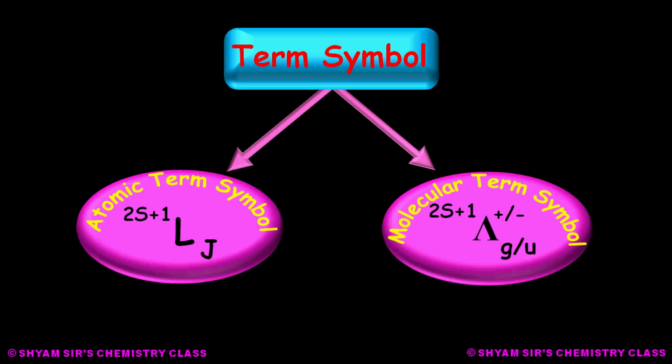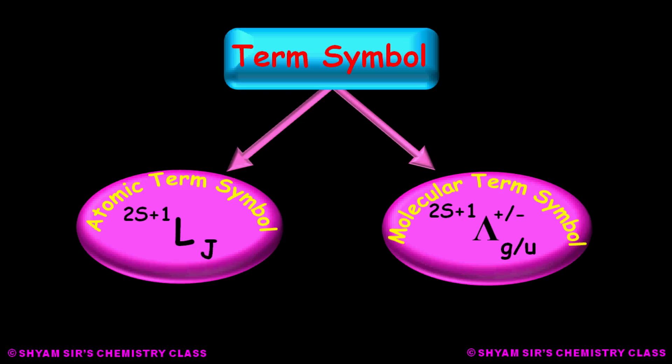What is atomic term symbol? Atomic term symbol is represented as 2S+1 L_J, where 2S+1 is the left superscript, J is the right subscript, and L is in the middle.